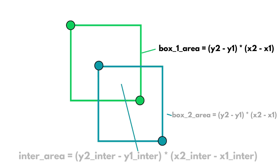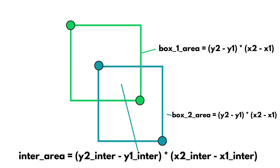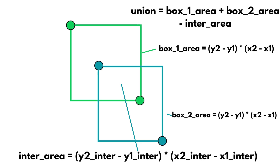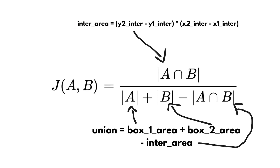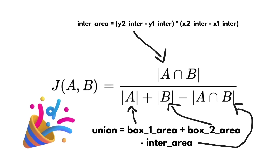So to recap: for the different areas we need, for box 1 (the ground truth) we have (y2 − y1) × (x2 − x1). Same thing for box 2, which is the prediction. And finally, for the intersection area, we find x1, y1, x2, y2 using our four formulas. Therefore the fourth area to find — the union — can be composed using the three areas we just found. Coming back to our formula, we can directly plug each of these quantities in, and voilà, we're done.